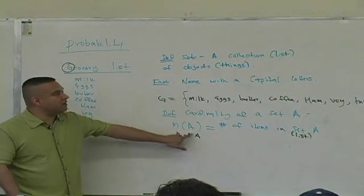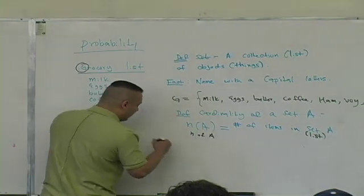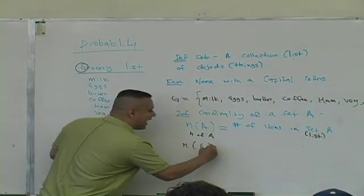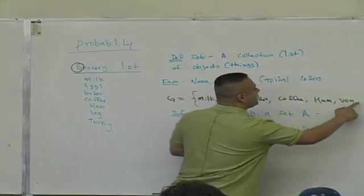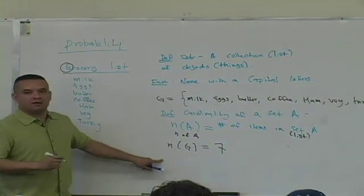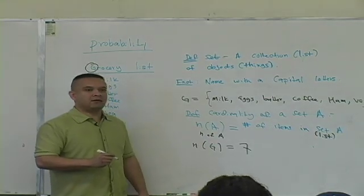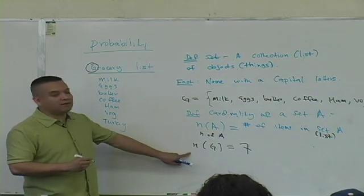Meaning, if I put set G in here, for example, n(G) now, right, is exactly what you're doing there. You're counting one, two, three, four, five, six, seven. Guess what? We have seven items. So n(G) is seven. Can we get in that line 10 items or less? Yes.